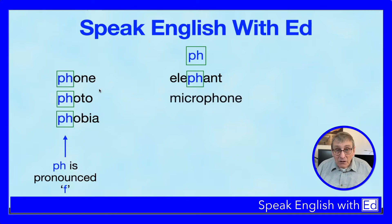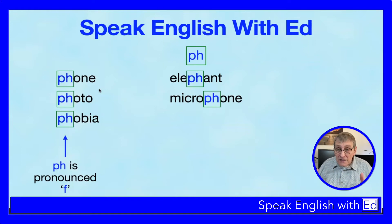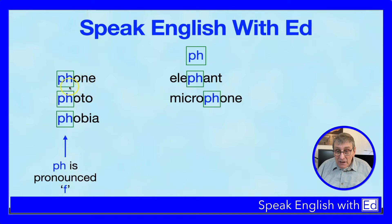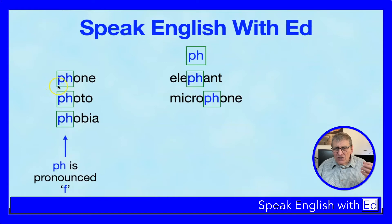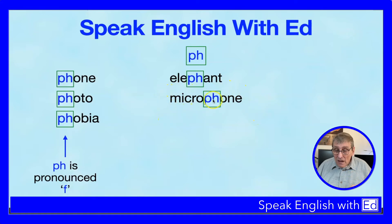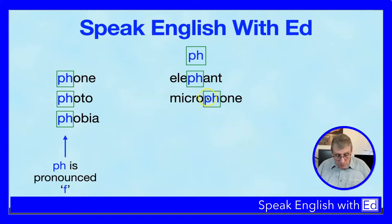Another PH in the middle of a word is 'microphone.' I'm using a microphone here for recording this video. We saw 'phone' on its own — it's actually a shortened version of 'telephone.' In 'microphone,' the PH is in the middle of the word, but it's still pronounced with an F sound.